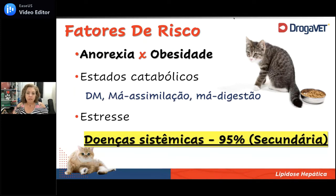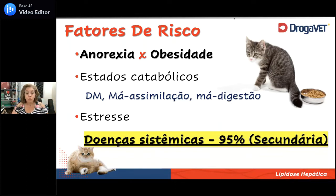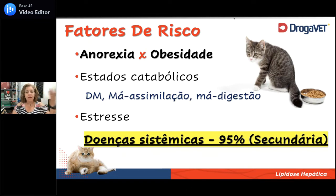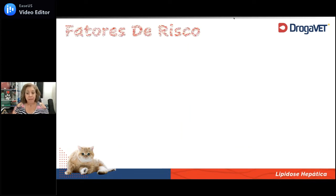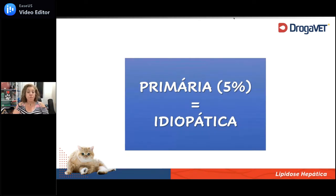Alguma coisa deflagrou esse processo nesse gato, e a galera deixa isso de lado e foca na lipidose. Mas eu preciso pesquisar se não tem uma doença infecciosa, parasitária, neoplásica, metabólica, degenerativa ou um quadro álgico associado. Eu descubro a lipidose, mas também tenho que fazer um trabalho paralelo para tentar determinar o que ocasionou a anorexia. Quando a gente não consegue descobrir a causa, desde que se empenhe, vai chamá-la de lipidose hepática idiopática felina, o que chega a no máximo 5% dos casos.